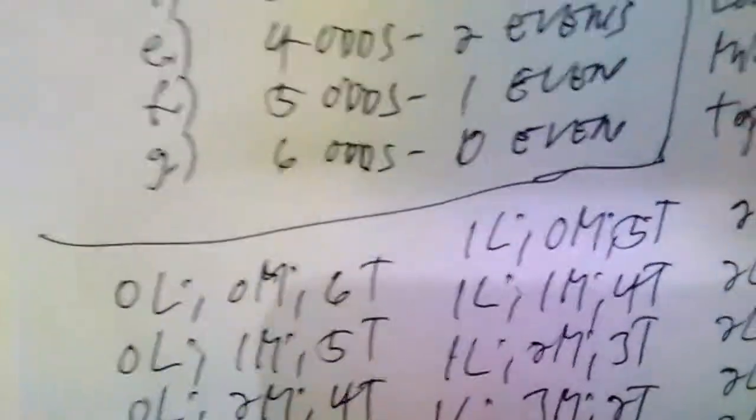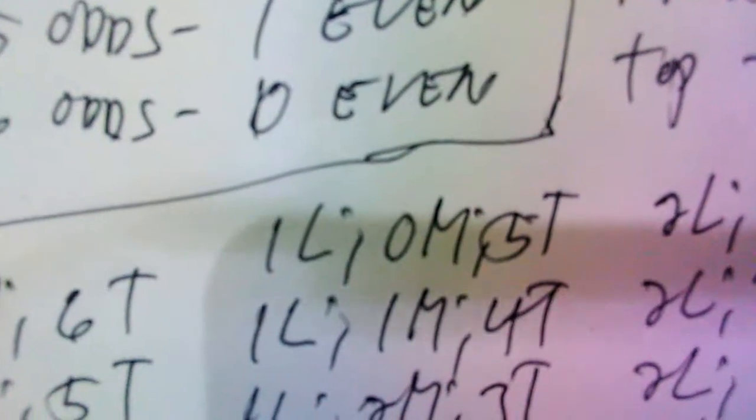The 28 LMT classifications include: 0 low, 0 middle, 6 top; 0 low, 1 middle, 5 top; 0 low, 2 middle, 4 top; 0 low, 3 middle, 3 top; 0 low, 4 middle, 2 top; 0 low, 5 middle, 1 top; 0 low, 6 middle, 0 top; 1 low, 0 middle, 5 top; 1 low, 1 middle, 4 top; 1 low, 2 middle, 3 top; 1 low, 3 middle, 2 top; 1 low, 4 middle, 1 top; 1 low, 5 middle, 0 top.